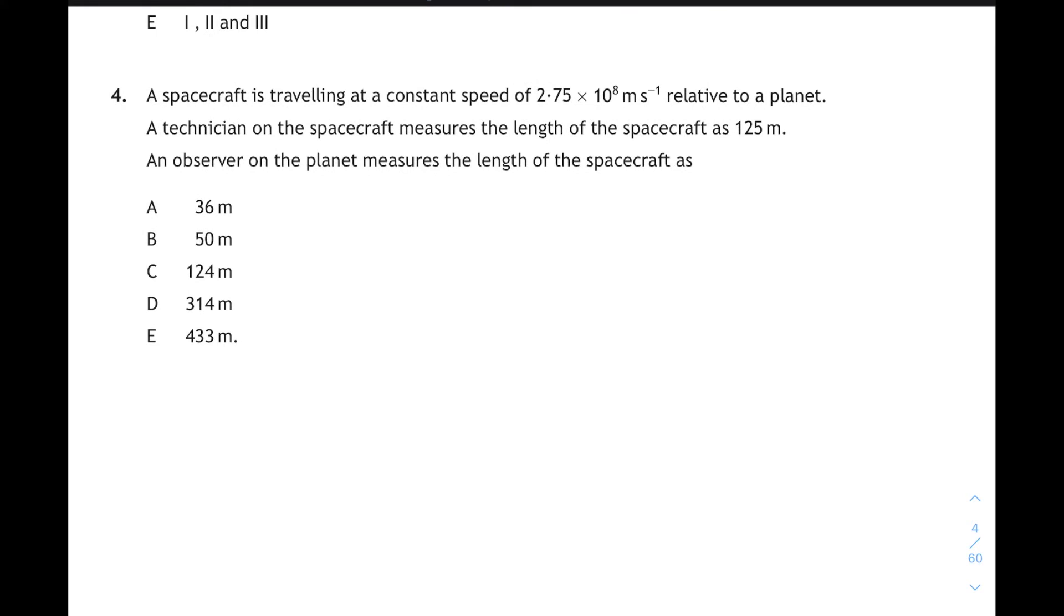Question 4. So a spacecraft travelling at 2.75 times 10 to 8 meters per second relative to a planet, and the technician measures the length of the spacecraft is 125 meters. The observed length of the spacecraft is, well, this is length contraction. So we look up our relationship sheet for the length contraction relationship. There it is. Substitute in your numbers. The proper length is 125. The speed was 2.75 times 10 to the 8, divided by 3 times 10 to the 8. Don't forget to square that, and don't forget to square root the whole bracketed term. That gives us an answer. You do that in your calculator. Make sure that you double-check these questions because these can be very, very easy to make an arithmetical mistake in. So make sure you check it twice.